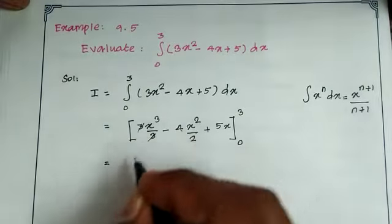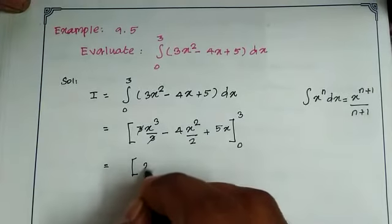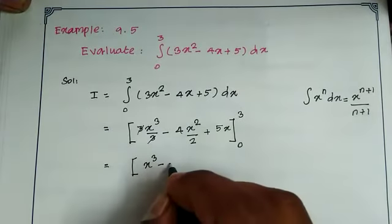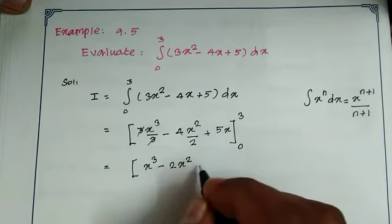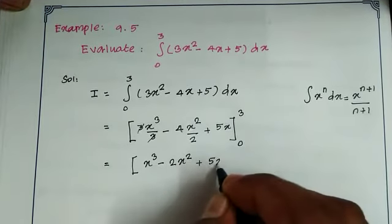The 3s get cancelled, so x cube minus 2x square plus 5x, limit 0 to 3.